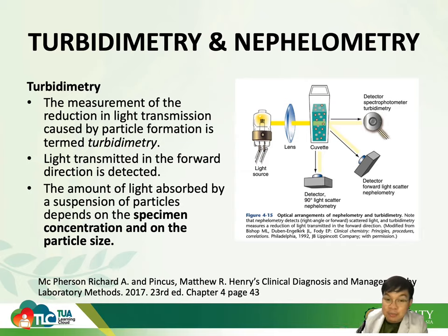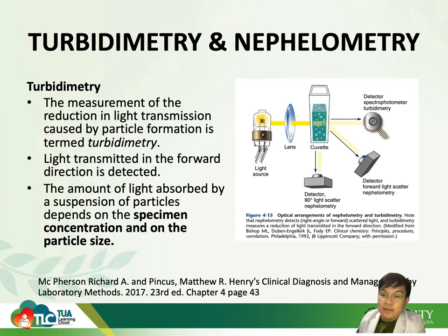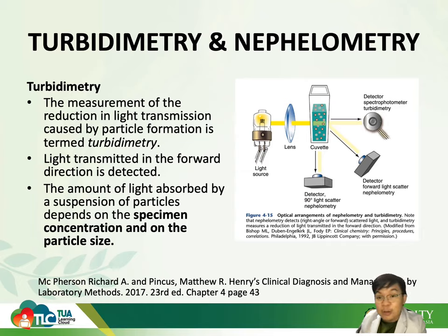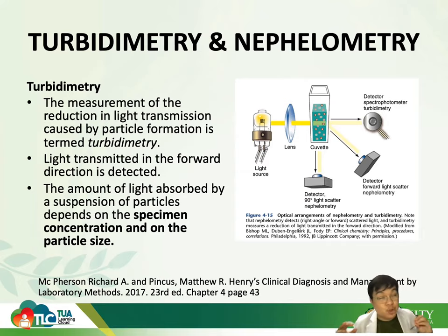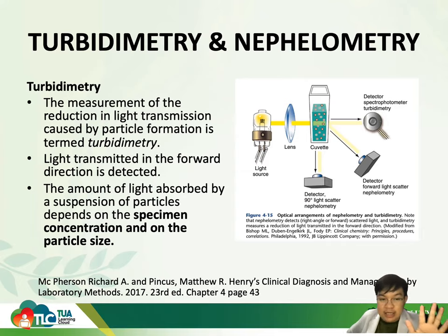The amount of light absorbed by the suspension of particles depends on your specimen concentration and also your particle size. Unlike spectrophotometry where absorbance is directly proportional to concentration, in turbidimetry, not only concentration but also particle size affects your absorbance. The larger the particle, the more light is absorbed. That's why this is not like our spectrophotometry — if you remember Beer's Law, molar absorptivity is constant, but in turbidimetry it is not constant. Beer's Law does not apply to turbidimetry.